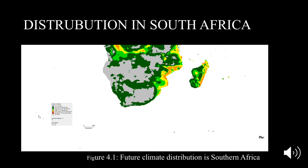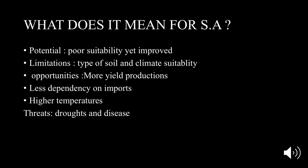Figure 4.1 represents the future climatic distribution in South Africa. If we compare future and current climatic distribution, we can see that climate suitability has improved in South Africa. However, it is still very poor. We are also faced with limitations such as soil type and agricultural space.